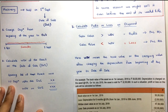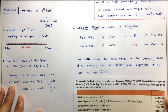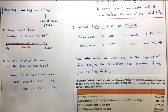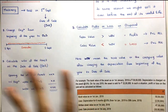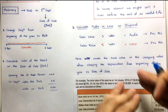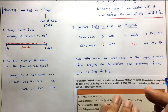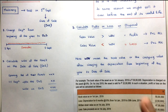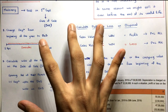Profits and losses on disposal go to the profit and loss account, because profit is income and loss is an expense. Now let's understand the accounting treatment — specifically how to pass journal entries and what happens in the ledger accounts.